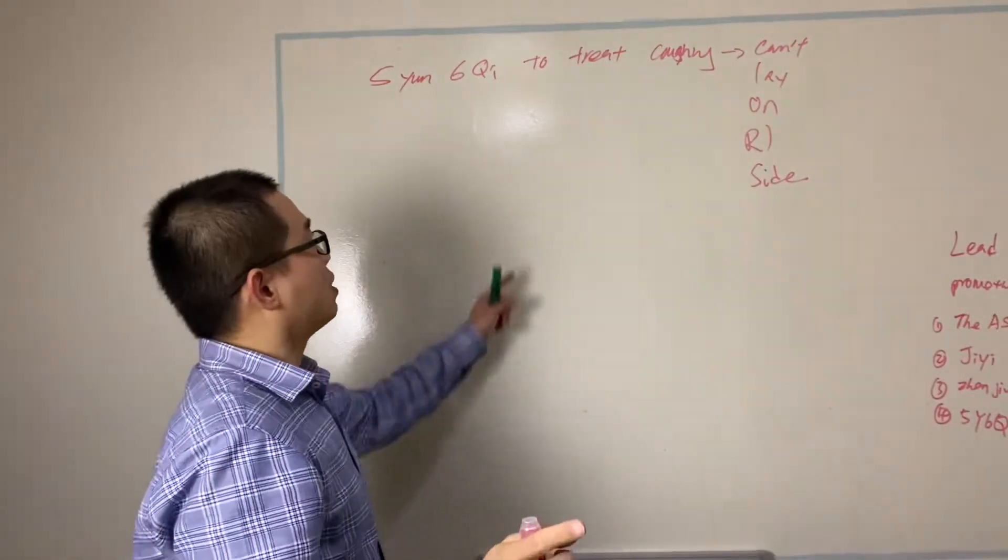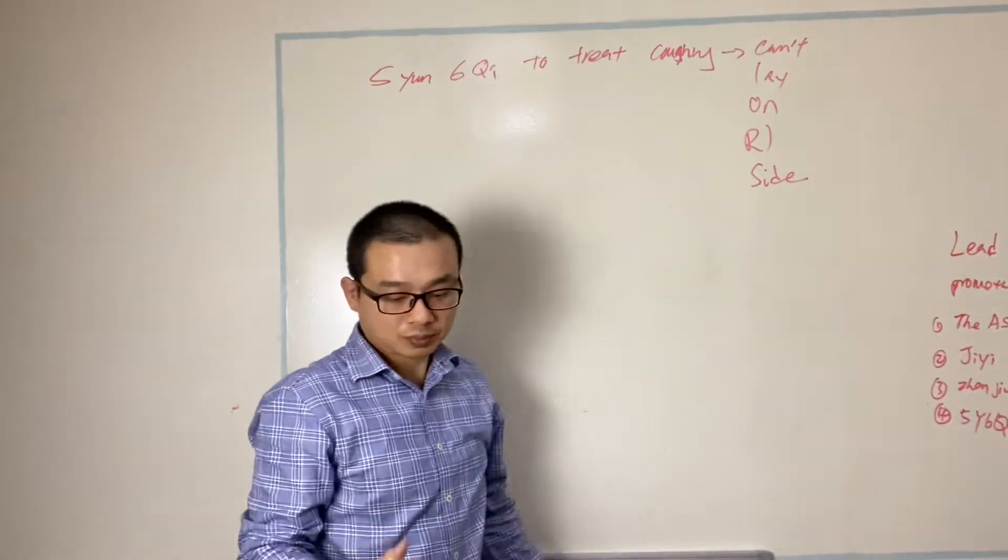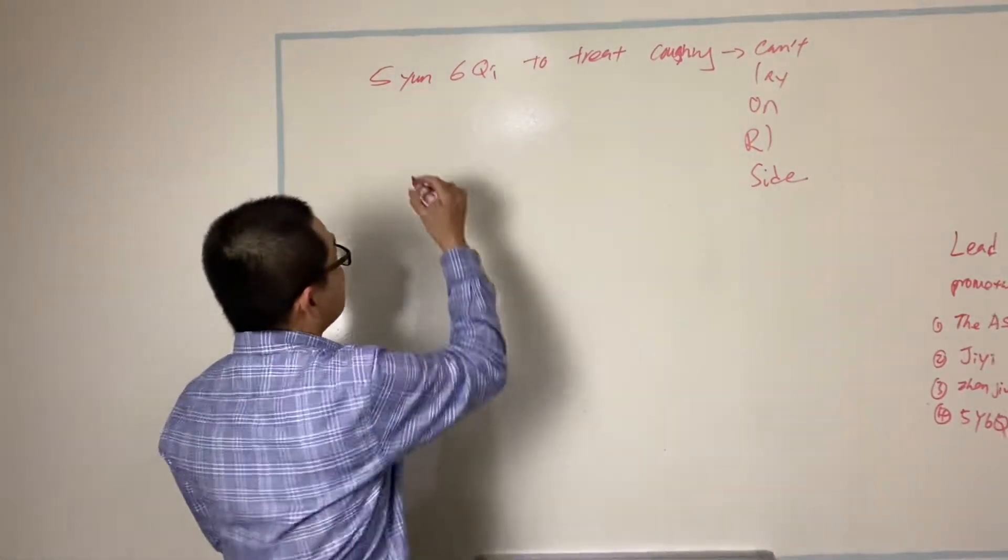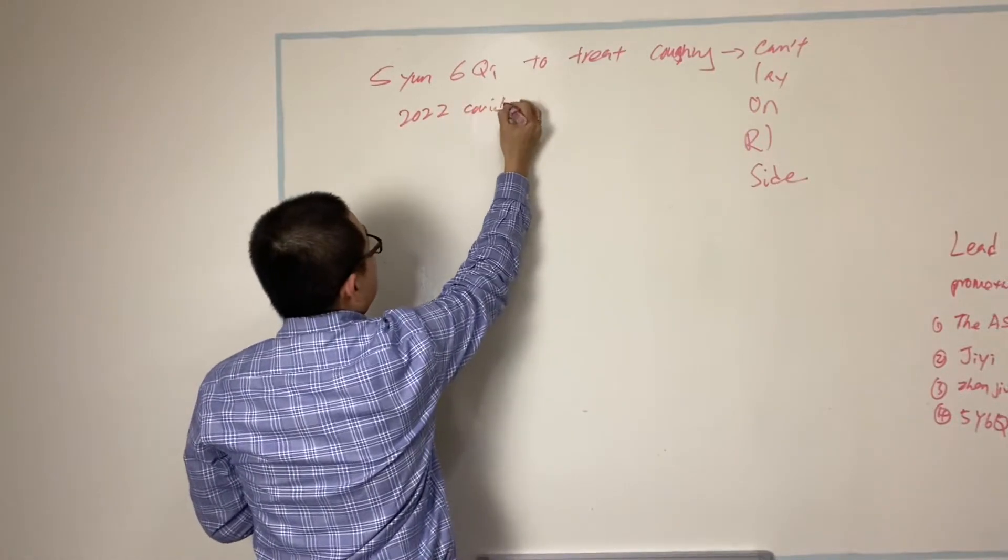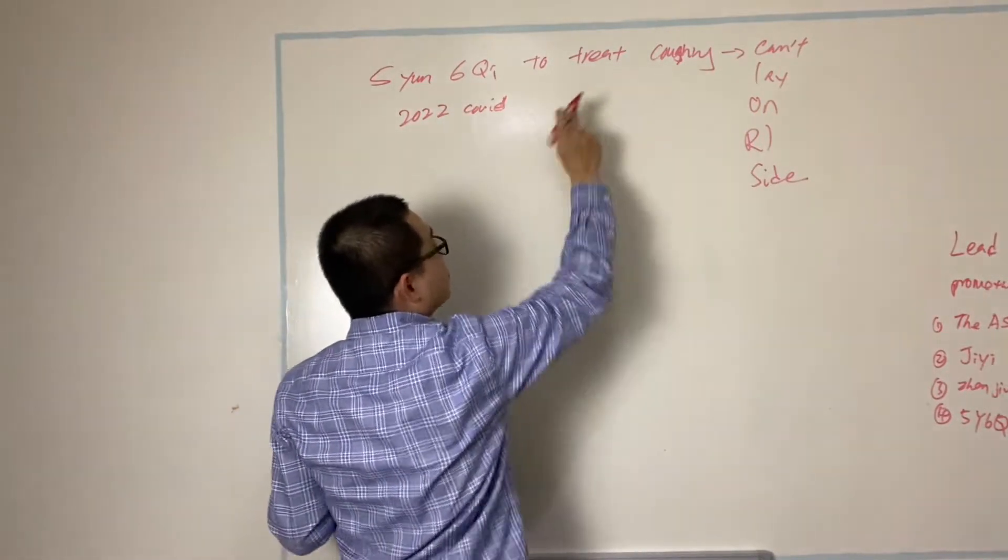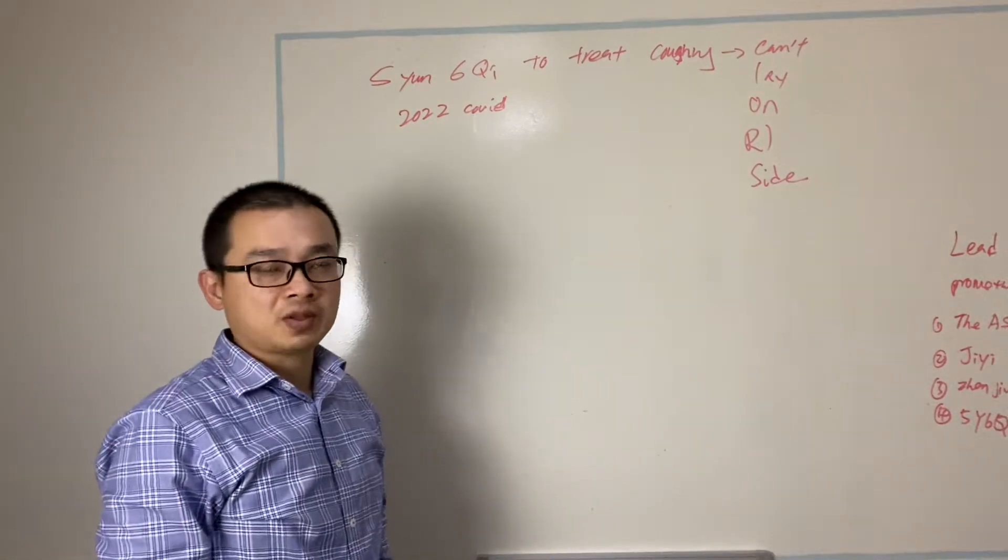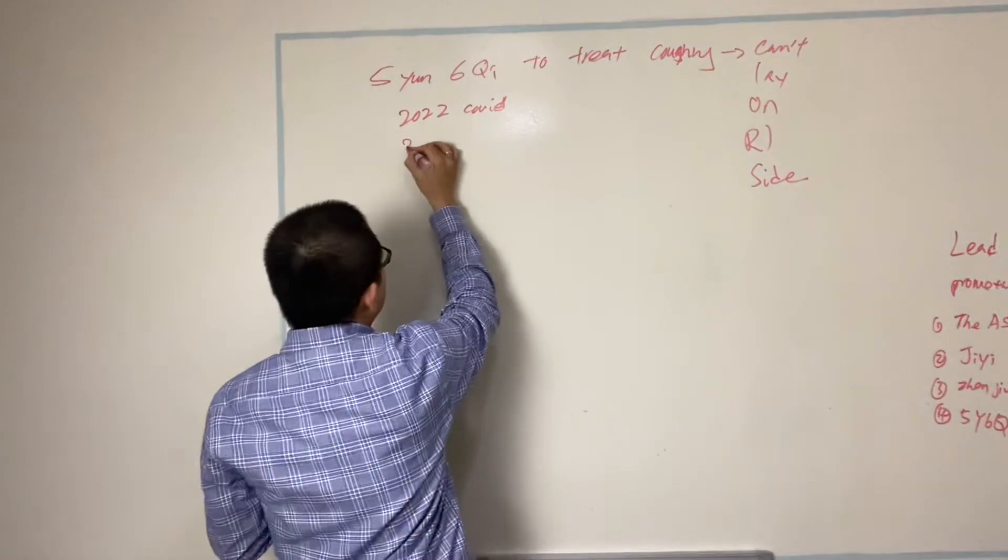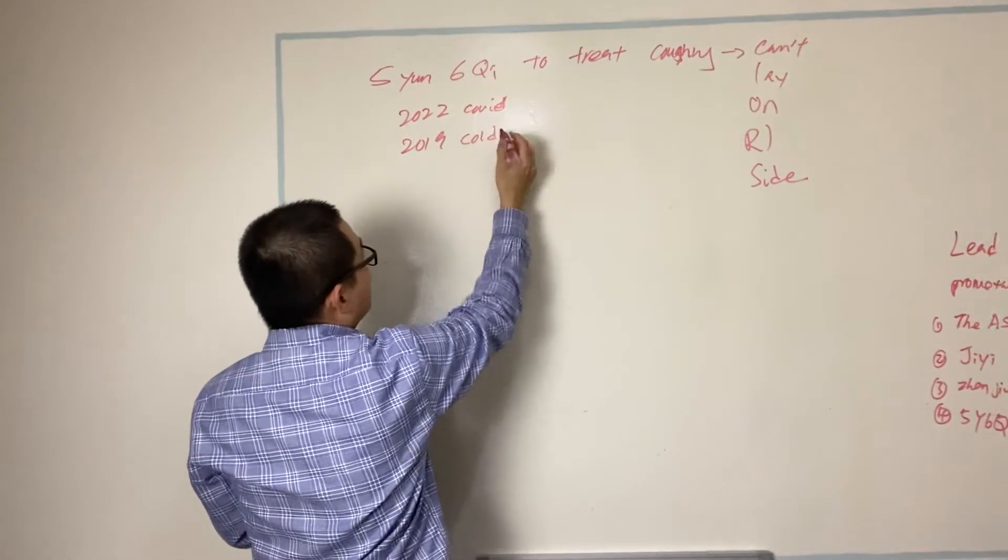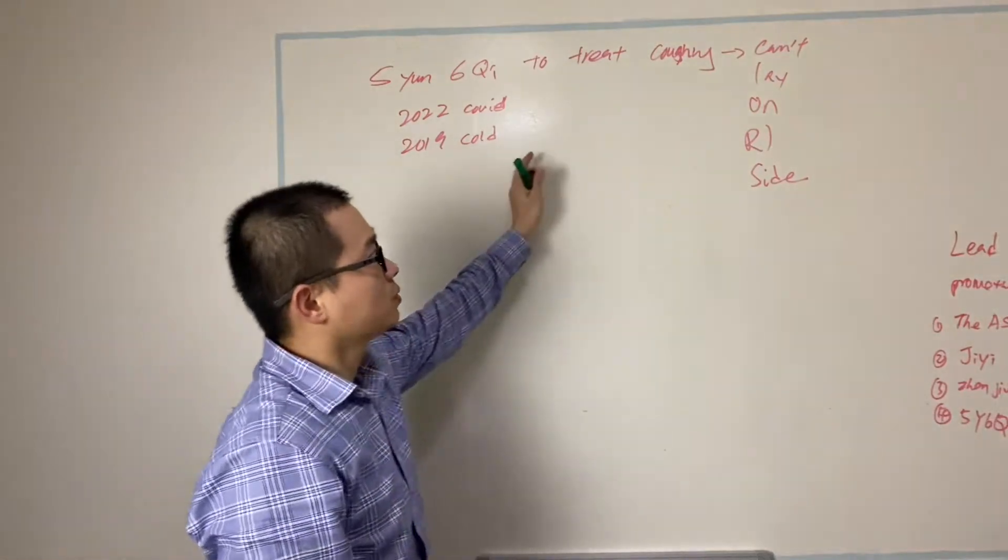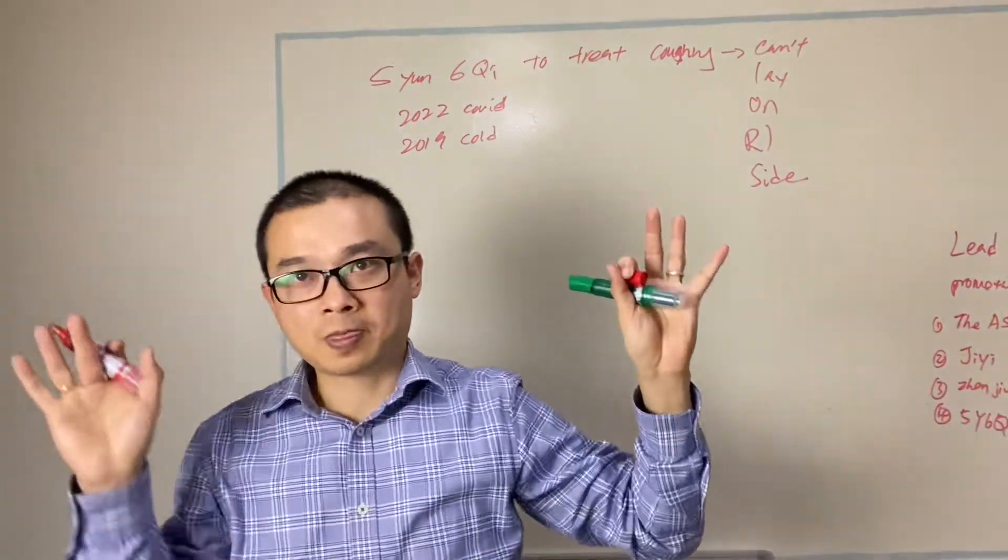Then she told me, well, I also have one symptom, coughing. She said in 2022 she had COVID. I said, did that happen when you had COVID? She said no, before that. Oh, before that, what happened then? She said 2019, she had a cold, just a common cold.